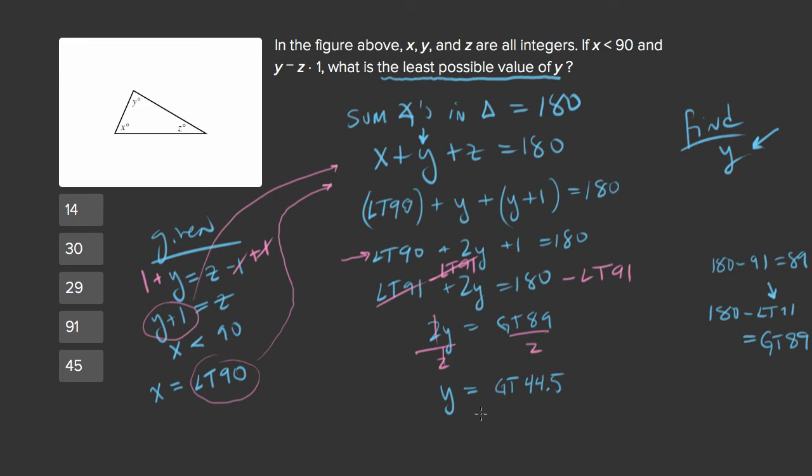And this we'll need to interpret to find our answer. So y is equal to some number greater than 45, which you can rewrite as y is greater than 44.5.